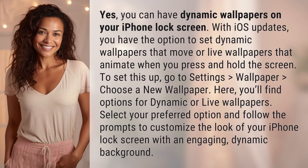To set this up, go to Settings > Wallpaper and choose a new wallpaper. Here, you'll find options for dynamic or live wallpapers. Select your preferred option and follow the prompts to customize the look of your iPhone lock screen with an engaging, dynamic background.